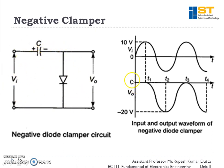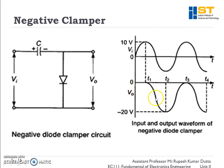The signal will get clamped down by minus 10 volts, so the axis becomes minus 10 volts. This signal gets superimposed on this potential, giving this type of waveform. When the input is 0 volts, we have 10 volts from the capacitor, so the output is 10 volts. When the input is minus 10 volts, the output is minus 10 plus minus 10, that is minus 20 volts. When the input is plus 10 volts, the output is plus 10 and minus 10, that is zero volts.